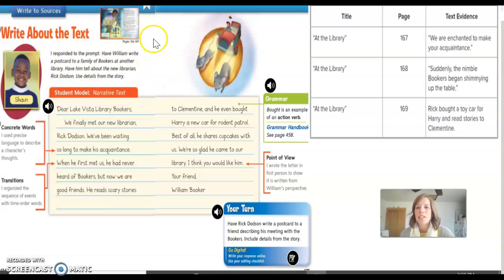Our prompt here says, I responded to the prompt, William, have William write a postcard to a family of bookers at another library. Have him tell about the new librarian Rick Dodson. Use details from the story.